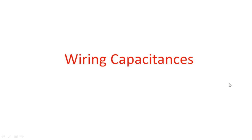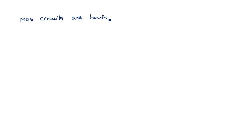In this video, you are going to learn about wiring capacitors. Wiring capacitors are virtual capacitors — we are not actually intentionally creating these, but because of the properties of MOSFET layers, these wiring capacitors virtually exist. This is because of two layers crossing side by side and separated by a dielectric medium. MOSFET circuits have three main capacitance effects.